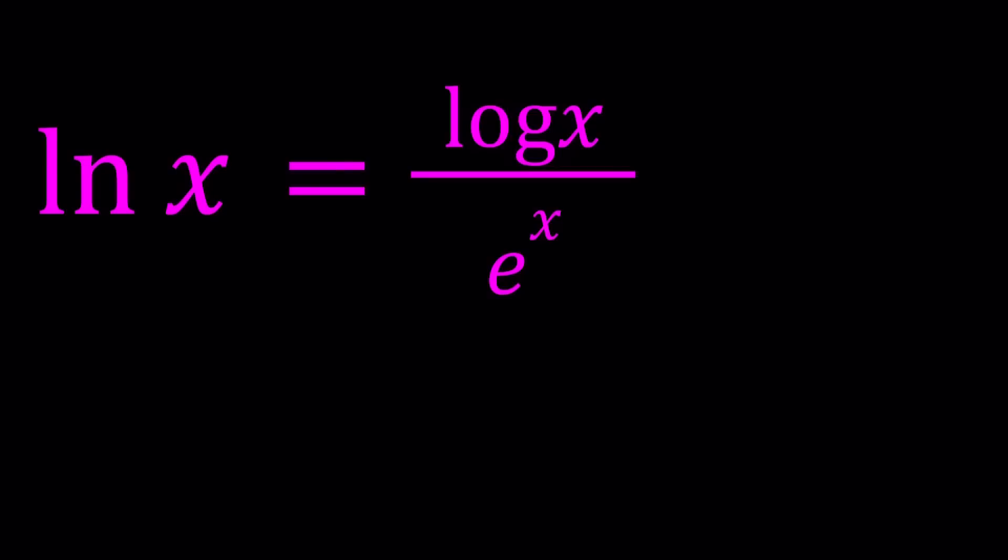You can also come up with these kinds of equations easily. Now we have ln x equals log x divided by e to the power x, e being Euler's number, the number that appears in natural log. We're going to be solving for x values. I'm going to walk you through the solution and also show you a graph at the end.